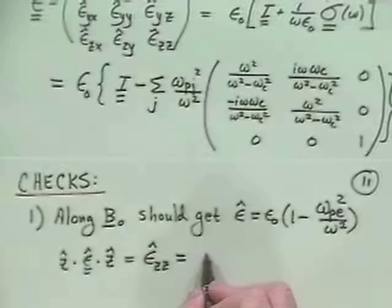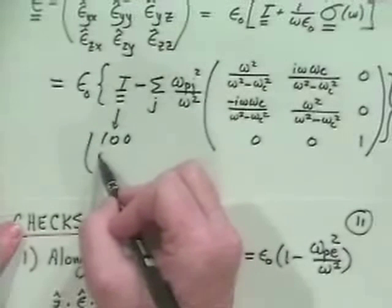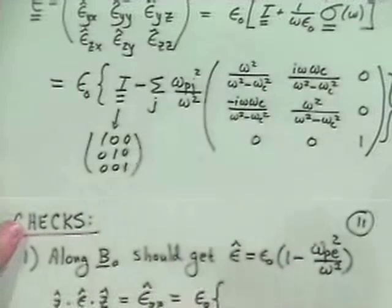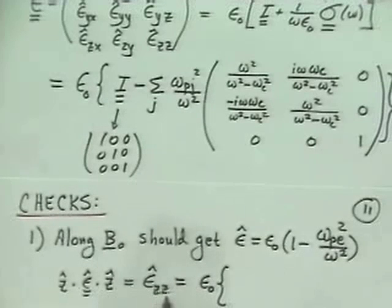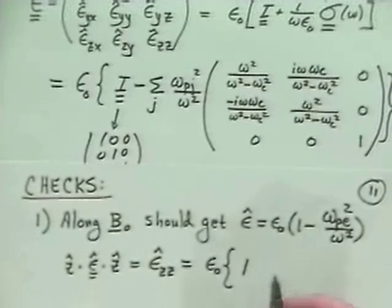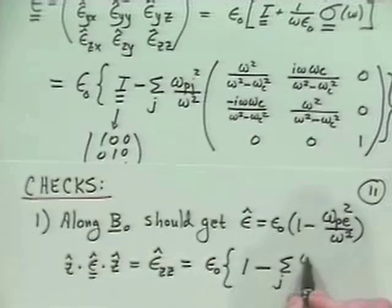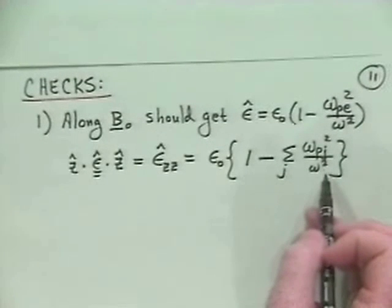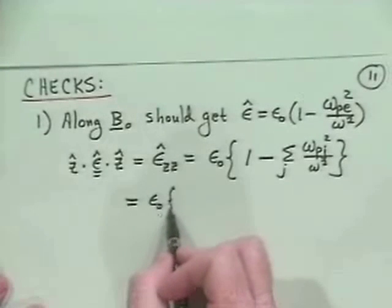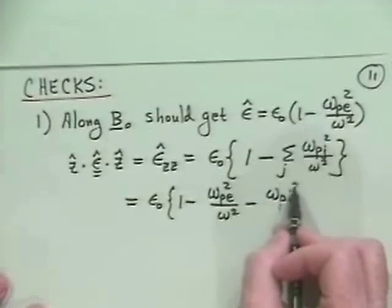So epsilon zz hat will be epsilon naught times: the identity tensor, of course, is just the 3x3 identity with ones along the diagonal in x, y, z coordinates. So we get a 1 from that, and then out of the summation over species we get minus the sum over j of omega pj squared over omega squared. Adding together — j represents both electrons and ions — this becomes epsilon naught times 1 minus omega pe squared over omega squared, minus omega pi squared over omega squared.